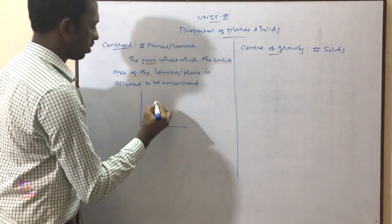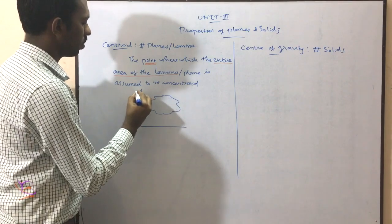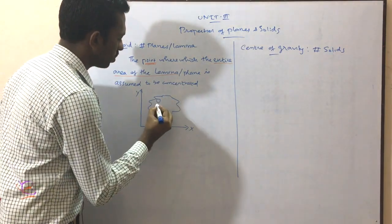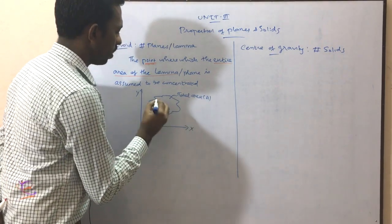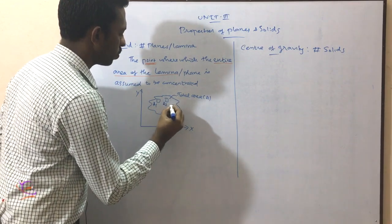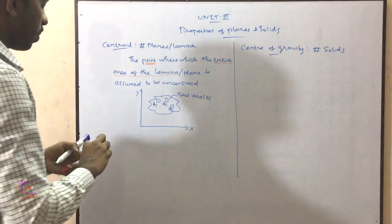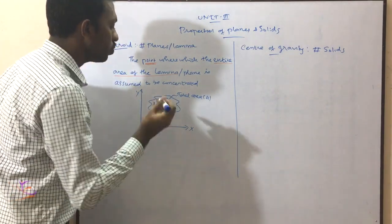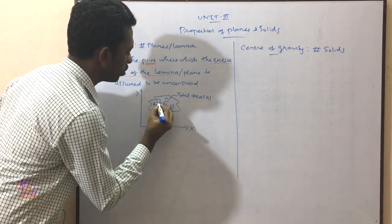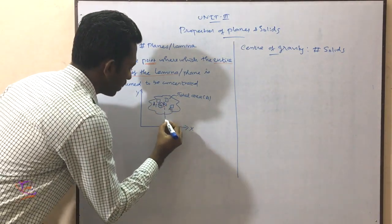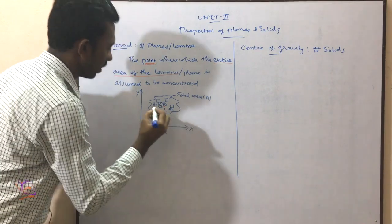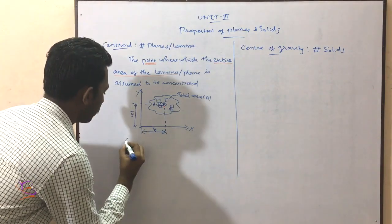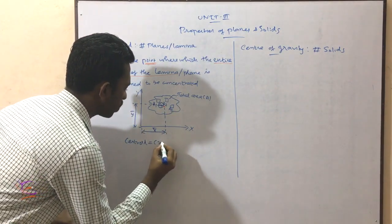Let me explain with a sketch. You can take this as a plane lamina — this is the y-axis, this is the x-axis. Here we can divide it into different elements: the total area is taken as A, with elements A1, A2, A3, and so on. I am assuming a point where the entire area A1, A2, A3 is assumed to be concentrated — that point is called the centroid, denoted by G. The distance from the y-axis to the centroid is called x-bar, and the distance from the centroid to the x-axis is called y-bar. So the centroid is written as (x̄, ȳ).